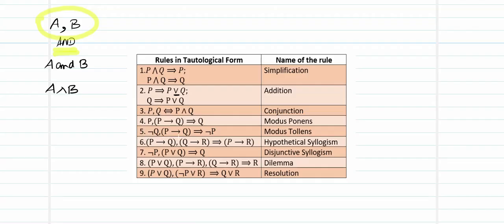Negation Q comma if-P-then-Q — negation Q and if-P-then-Q — we infer negation P. This is called modus tollens. Next, if P then Q, and if Q then R — like a chain reaction P to Q and Q to R — then we can go from P to R. This chain route is referred to as hypothetical syllogism. Negation P and P-or-Q infers Q — this is disjunctive syllogism. P-or-Q, if-P-then-R, and if-Q-then-R infers R — referred to as dilemma. P-or-Q and negation-P-or-R leads to Q-or-R — called resolution.